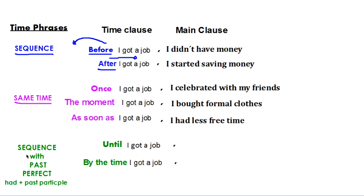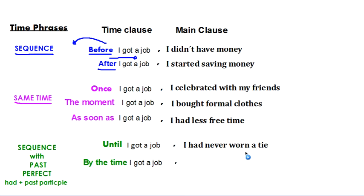The last one we're going to look at is sequence with the past perfect. The past perfect uses 'had' for the auxiliary and the past participle for the main verb. I use it with things like 'until' and 'by the time.' So, 'until I got a job, I had never worn a tie.' I can also use 'by the time,' which is like another way to say 'before almost.' So, 'by the time I got a job, I had applied at many places.' These two are difficult to understand, so I'm going to focus more on these with different examples.